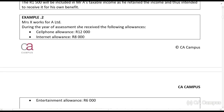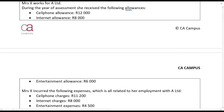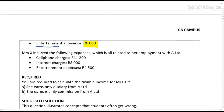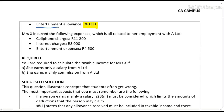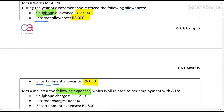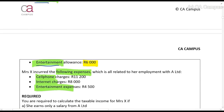Example two: Mrs. X works for A Limited. At the end of the year of assessment she received the following cash allowances — a cell phone allowance, an internet allowance, and an entertainment allowance. The first thing you need to know is that no matter what the situation, these allowances will definitely be included in taxable income. She also incurred corresponding expenses: cell phone charges, internet charges, and entertainment expenses.